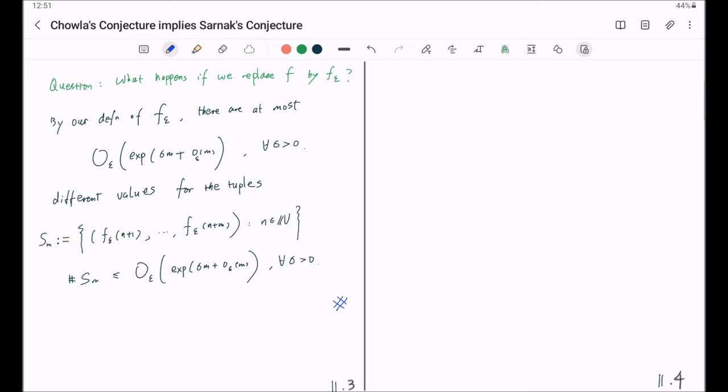Now we move on to step number two. The goal of this step is to give an estimate for the expectation where n is drawn uniformly randomly from one, two, all the way to the floor of x.